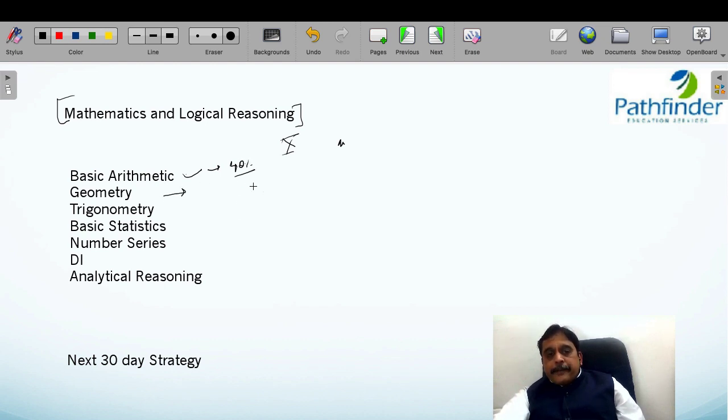Then you have basic geometry and mensuration, the kind of questions you see in class 10th level. You have trigonometry, very elementary trigonometry. Basic statistics: mean, mode, median, variance, standard deviation. There can be questions in basic statistics. Number series, basic data interpretation, and analytical reasoning, meaning blood relations, direction sense, calendars, clocks, coding decoding. These are all analytical reasoning. This is primarily the maths curriculum.